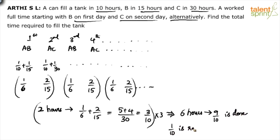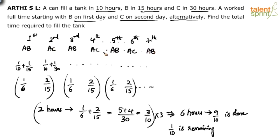Only 1/10 of the work is remaining. The question is: who will do this 1/10? After 6 hours comes the 7th hour. Since all odd hours involve A and B, in the 7th hour A and B come into picture. A and B together can do 1/6 of the work in one hour.